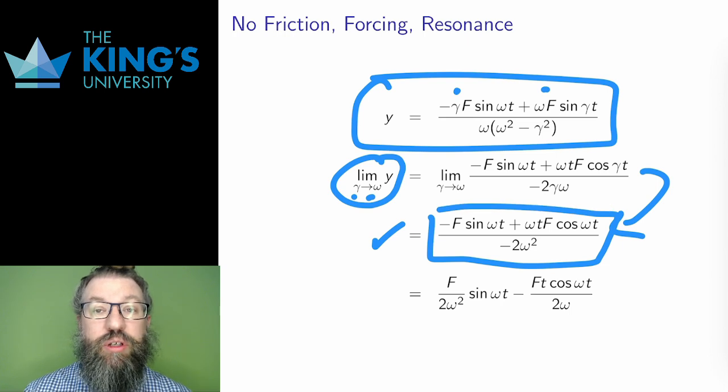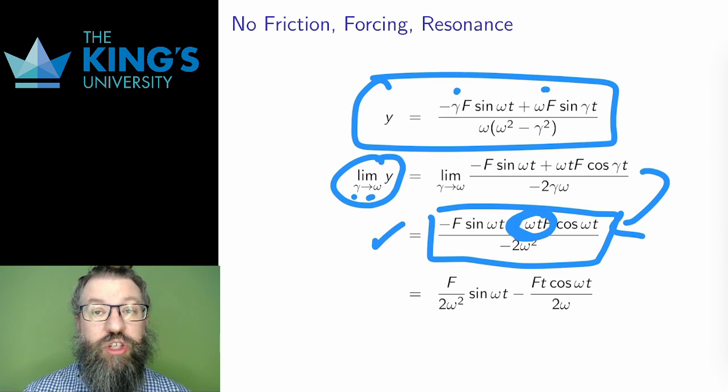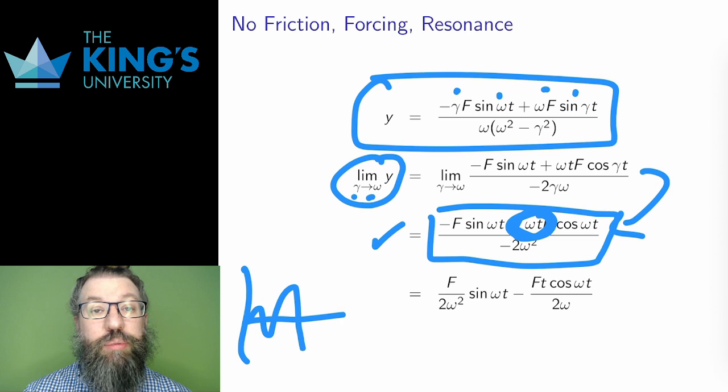What has happened in this limit? Well, it's similar, but now there is a t in the amplitude of the second term. This is a major change. The previous solution had waves with fixed amplitude. In the limit, as the forcing frequency and the natural frequency coincide, the result is a wave with linearly increasing amplitude.